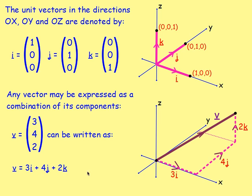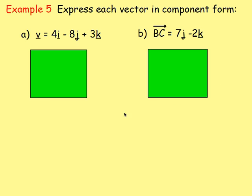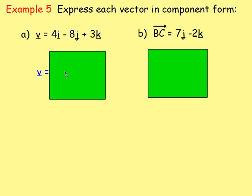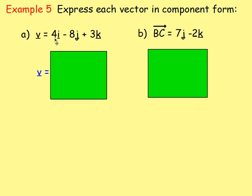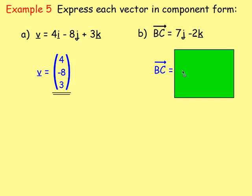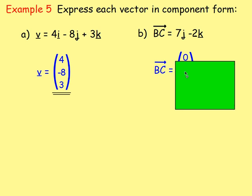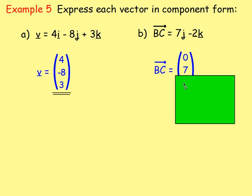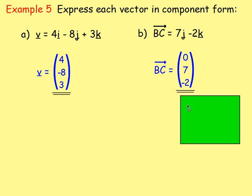The vectors i, j, and k are ones you need to be familiar with. Express each vector in component form. If vector V equals 4i minus 8j plus 3k, then in component form, vector V equals (4, -8, 3) — four for x, negative eight for y, and three for z. For a vector with no i term, zero j, and the coefficients of j and k: the components would be (0, 7, -2), giving zero for x, seven for y, and negative two for z.